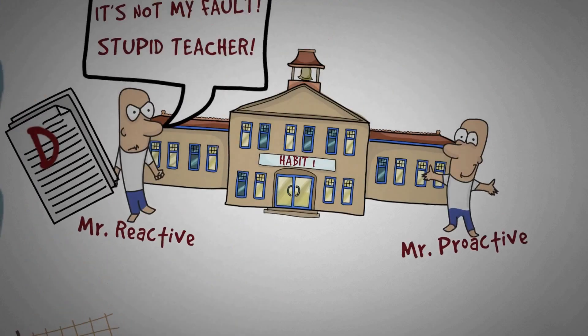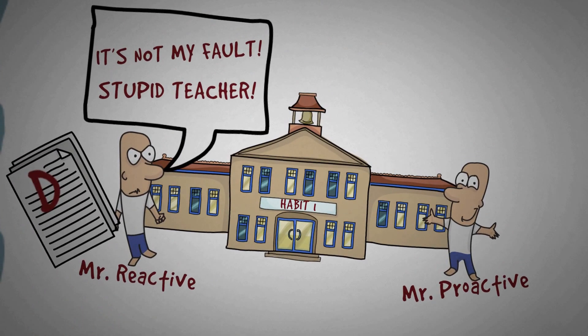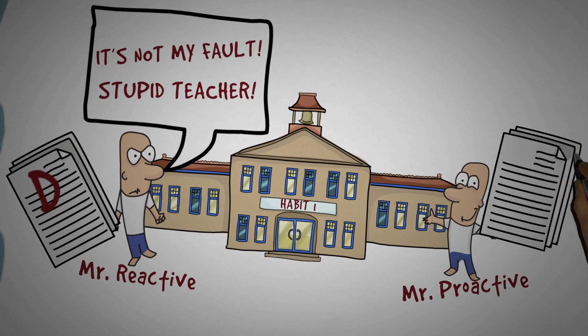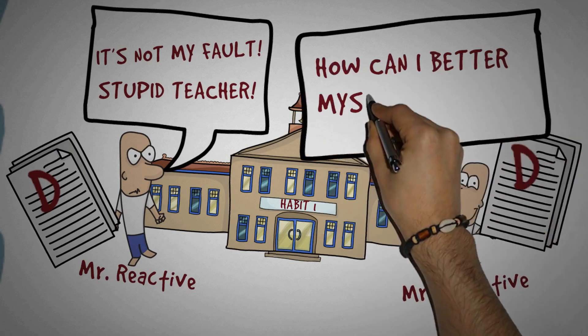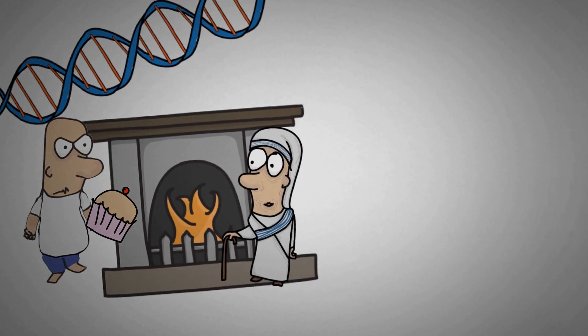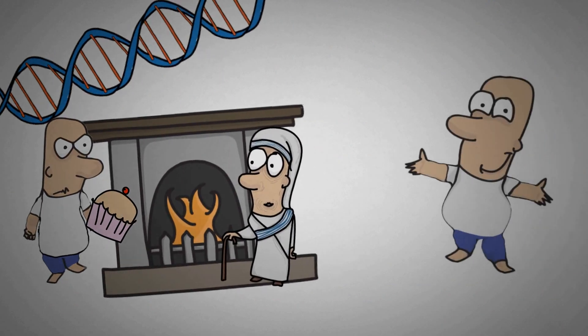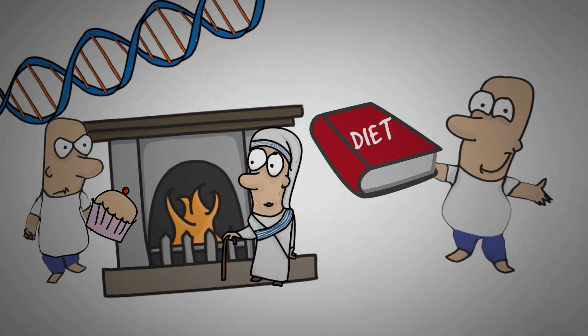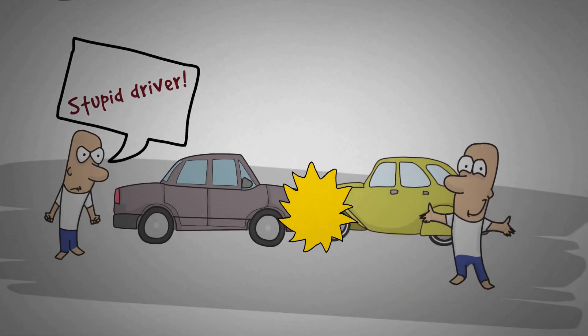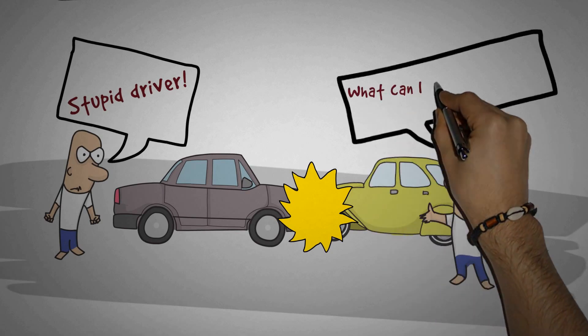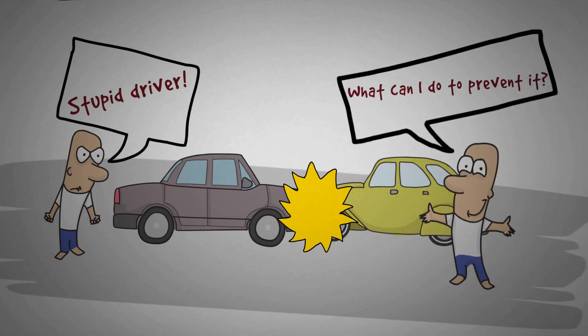Proactive persons, on the other hand, take responsibility. If a proactive person gets a bad grade, he thinks about how he can better himself next time. If he becomes overweight, he starts learning about his diet and gets a gym membership. If he gets involved in a car accident, he thinks about what he can do to prevent an accident next time, even if it was the other driver's fault.